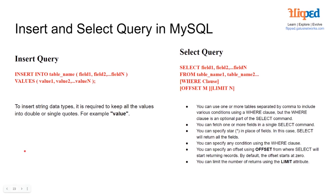For insert and select queries in MySQL, the insert format is INSERT INTO, then our table name, then the fields in brackets separated by commas — such as tutorial_id, tutorial_name, tutorial_author — followed by VALUES, and then the corresponding values in the same order. For example, 1 and then our tutorial name being 'MySQL data types', and then our tutorial author, and so on. To insert string data types, it is required to keep all values in double or single quotes.